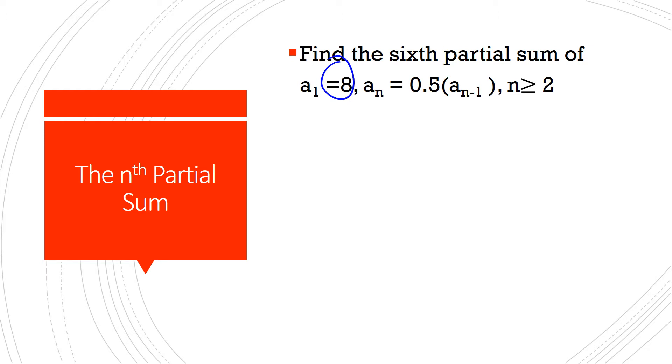So we've got to find a2, a3, a4, a5, and a6, and then add them together. So let's begin. a2 then is equal to 0.5 times a_(2-1), a1, which is 8. And 1 half times 8 is 4.